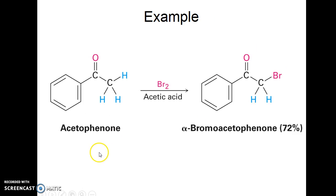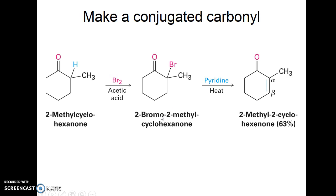Here's an example: acetophenone treated with bromine and acetic acid — just a catalytic amount of acid — gives bromination of the alpha carbon. You can make a conjugated carbonyl relatively easily from any aldehyde or ketone by doing acidic bromination or acidic chlorination.